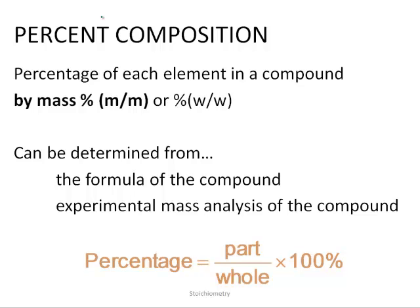The next thing we're going to want to be able to calculate is the percent composition of a substance. We've used percentage quite a bit. If you've ever calculated your grade, you know that you take the total number of points in a course and divide by the part that you were able to earn, and if you multiply that by 100, what you get is percent.